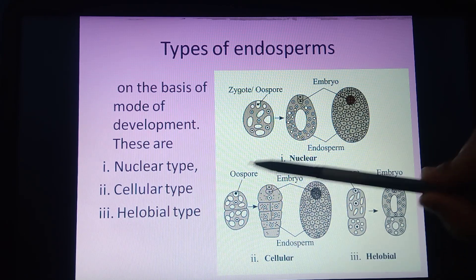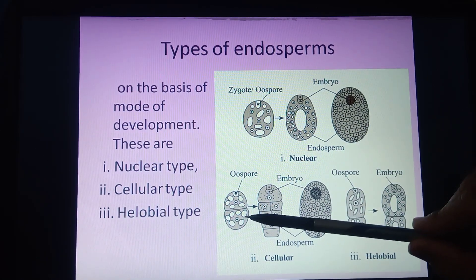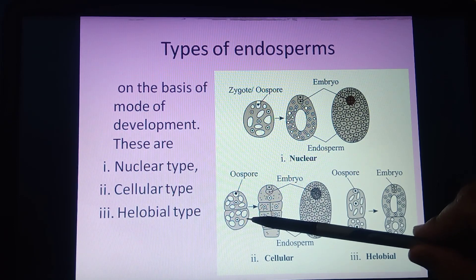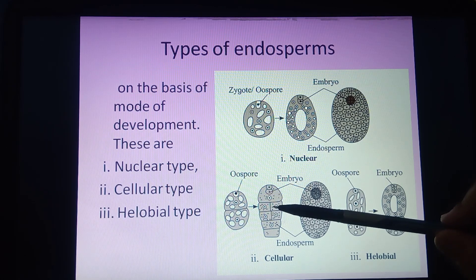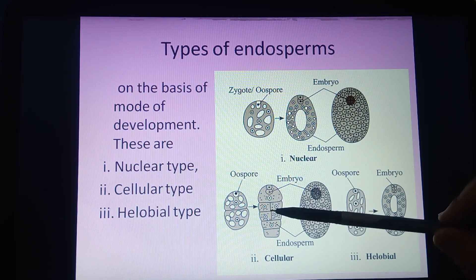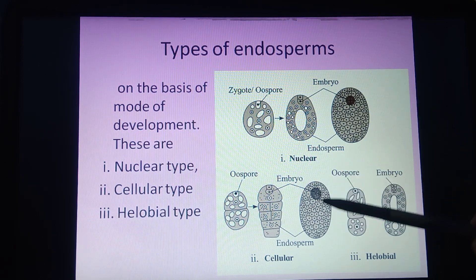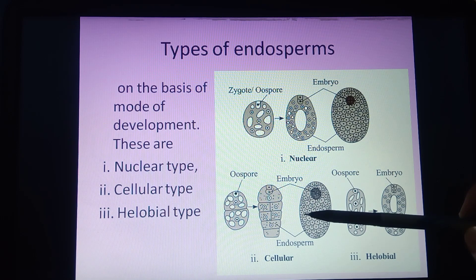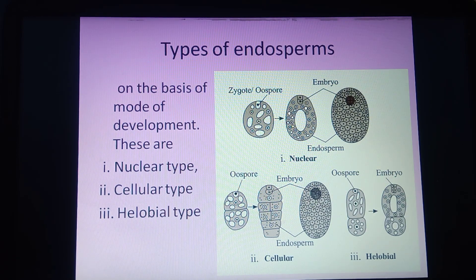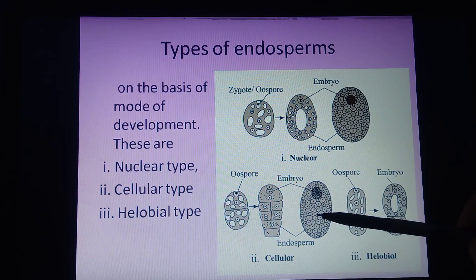The second type is cellular endosperm. The primary endospermic nucleus undergoes mitotic cell division, where one cell forms two cells, immediately followed by division of the cytoplasm as well — one forms two, two forms four, four forms eight, sixteen, and so on. In cellular type of endosperm, immediately after nuclear division, cytoplasmic division is also completed. This type is observed in about 72 families of angiosperms.